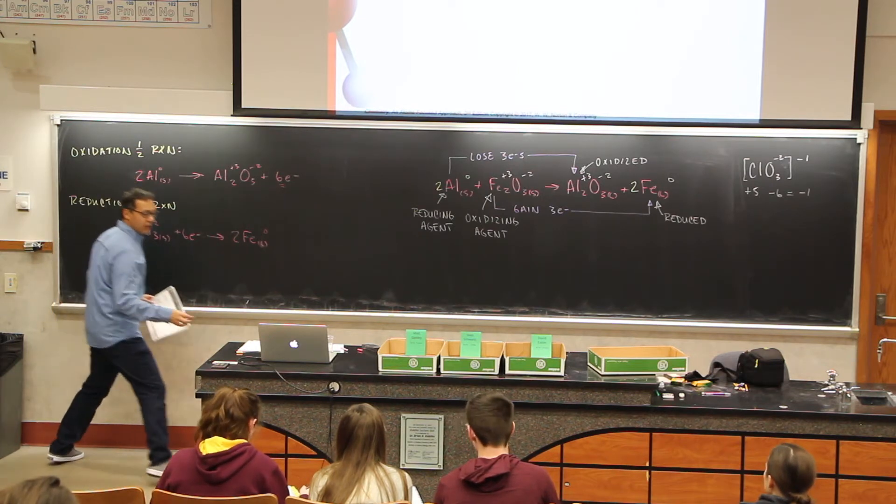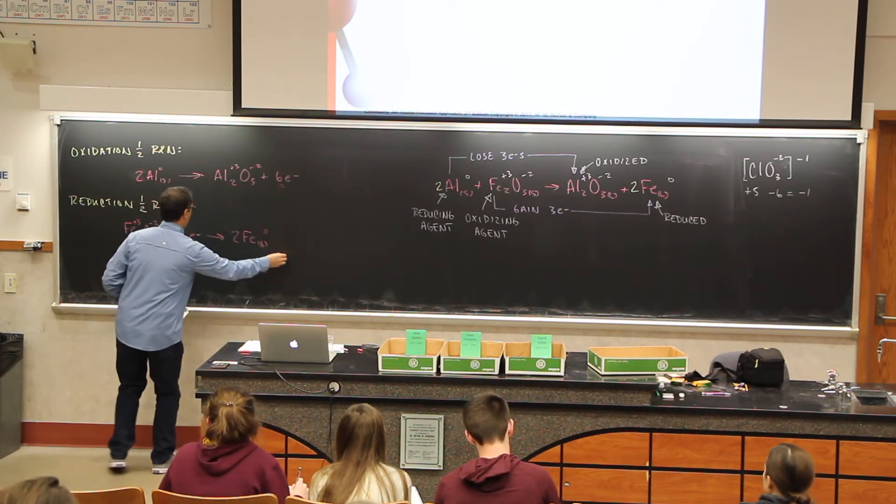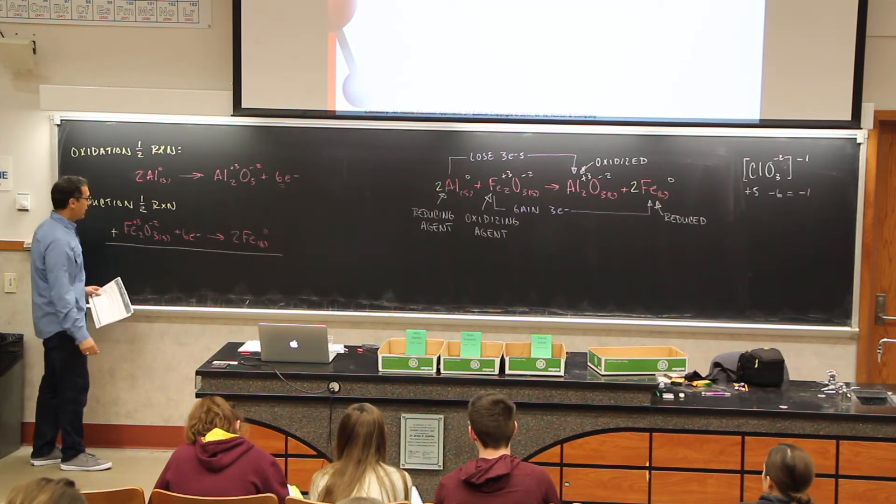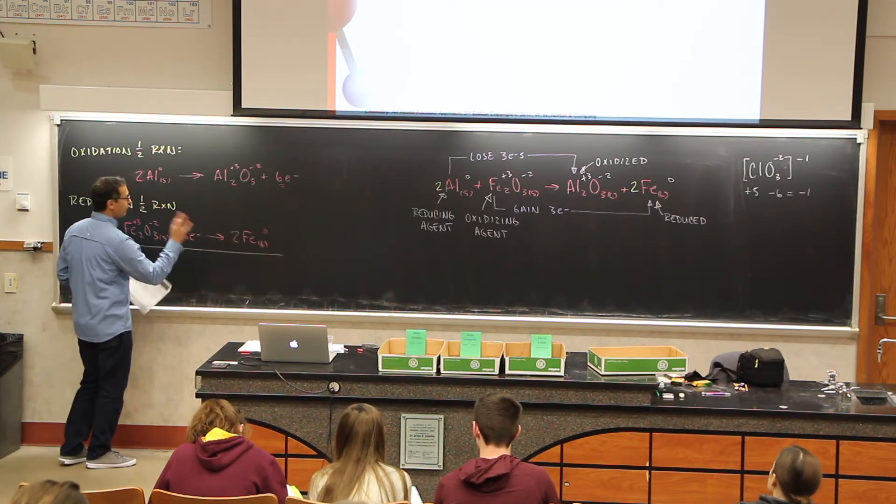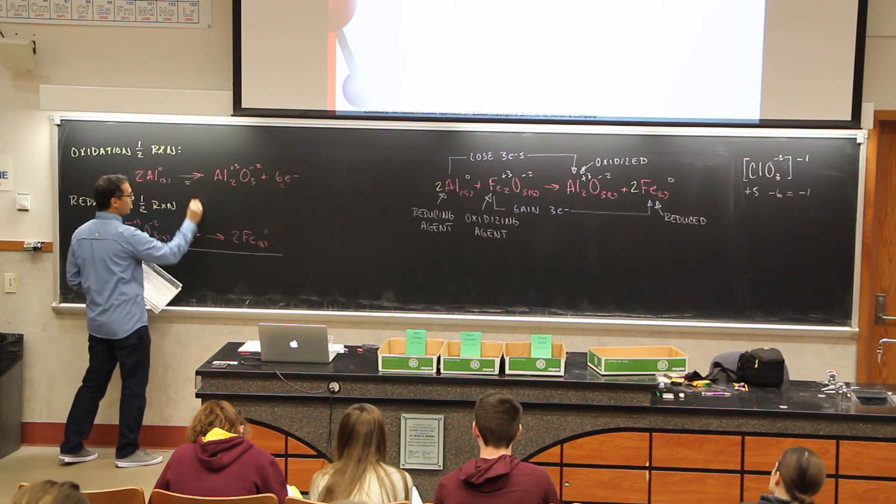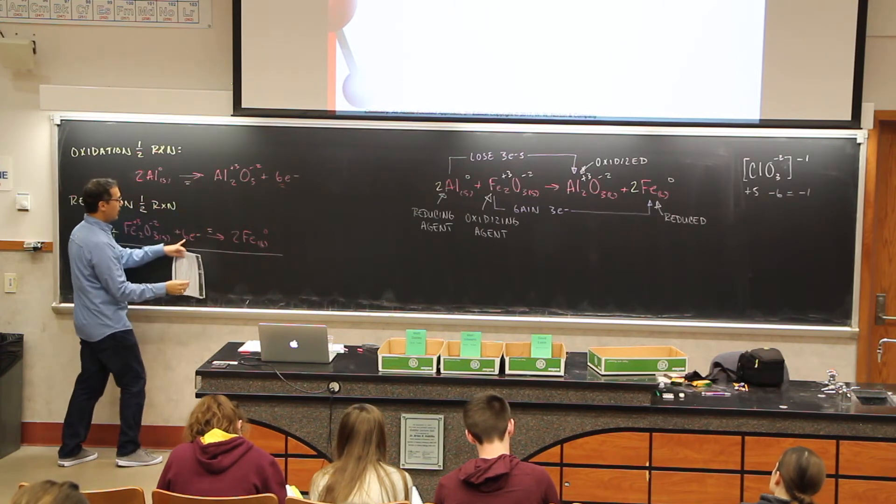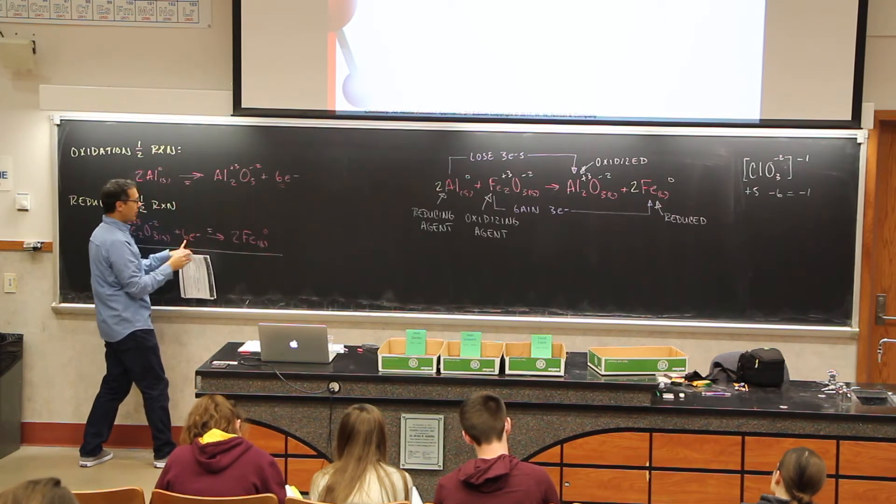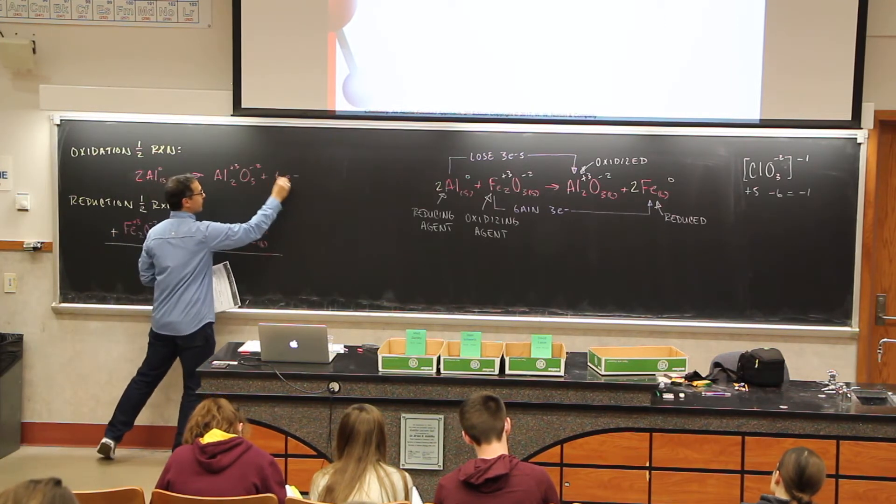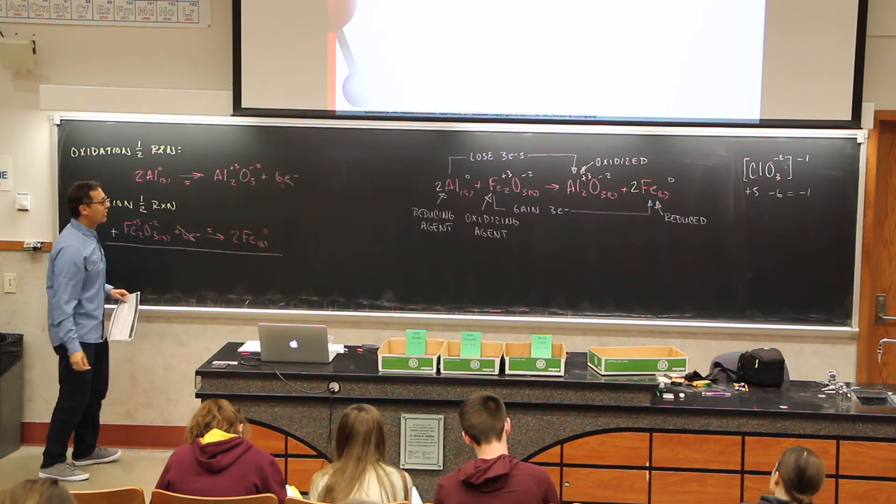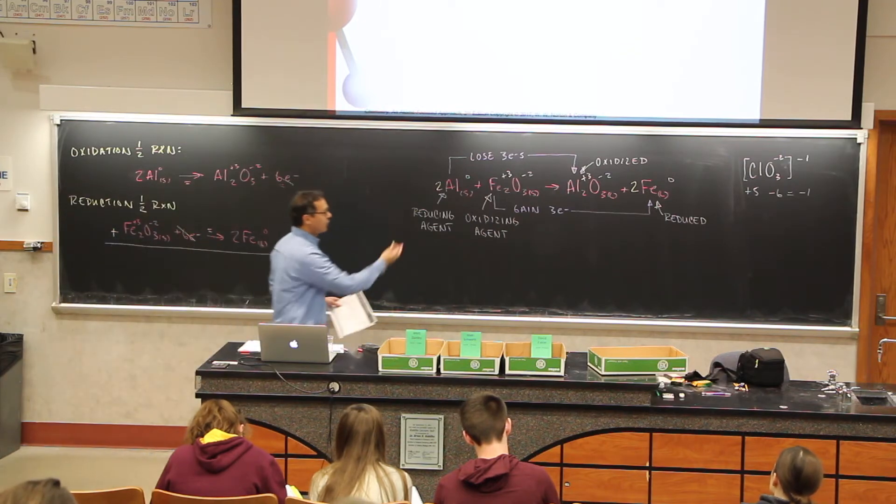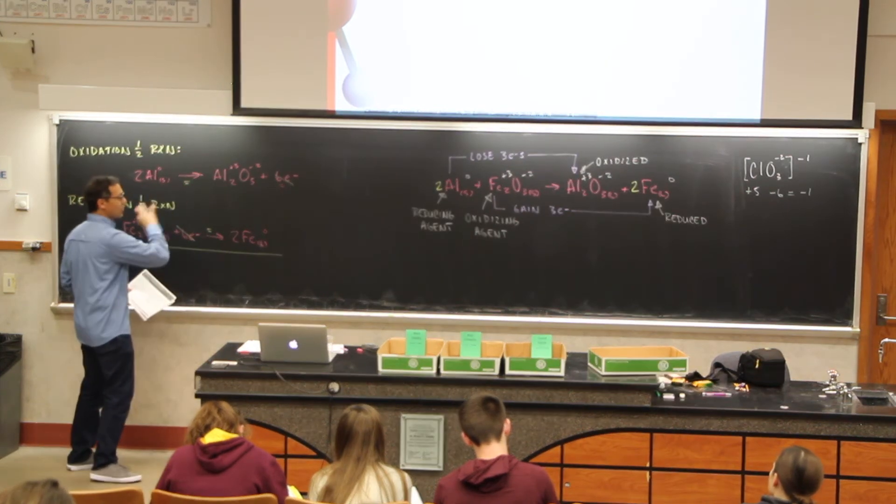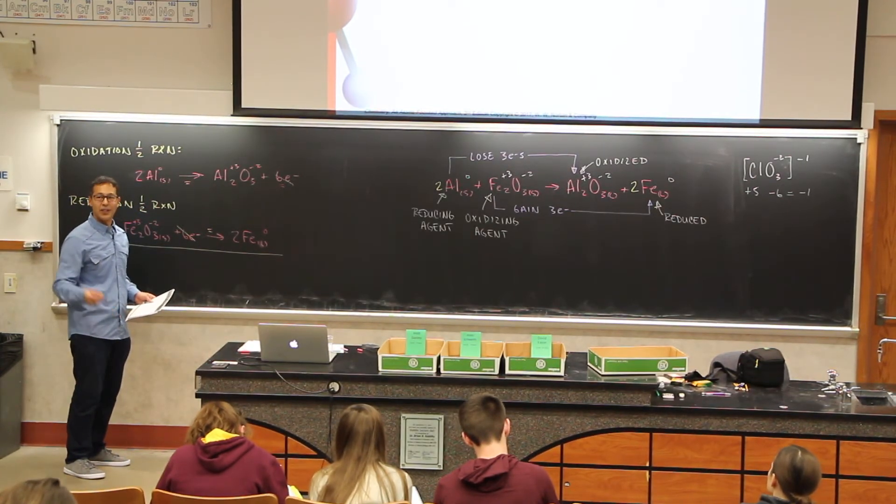So if we were to add these together, if we were to add these two half reactions together, our electrons, if we just kind of imagine this as an equal sign, you've got electrons, six electrons, six electrons on opposite sides. These should cancel out like this and then we'd be left with our original equation. It's just trying to show that six electrons went from one side to the other.